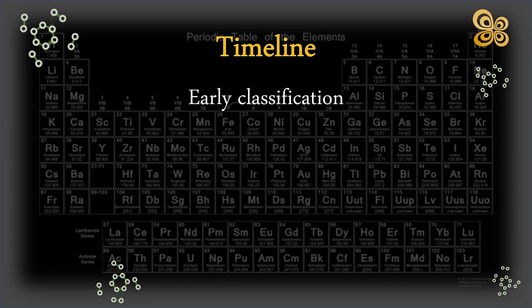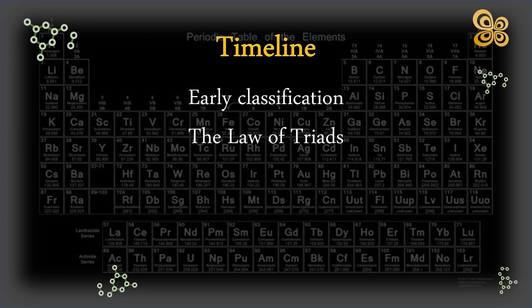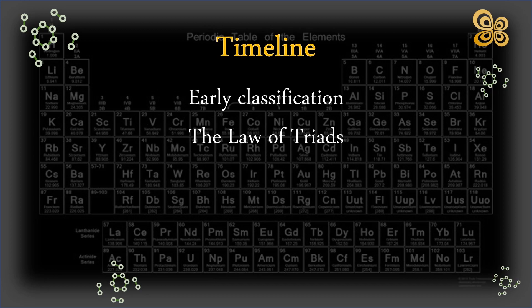Next is the law of triads. Johann Wolfgang Döbereiner discovered in 1829 that some groupings of three elements shared characteristics and named these groups triads. Lithium, sodium, and potassium, for instance, shared chemical characteristics.